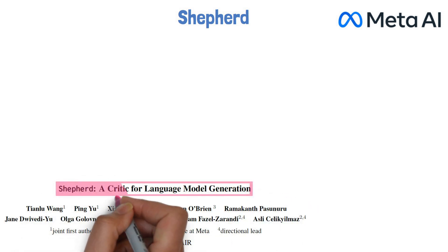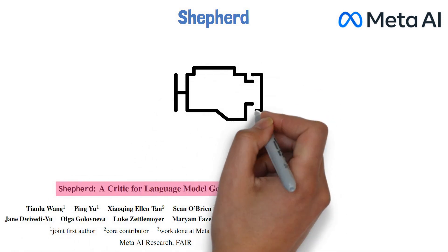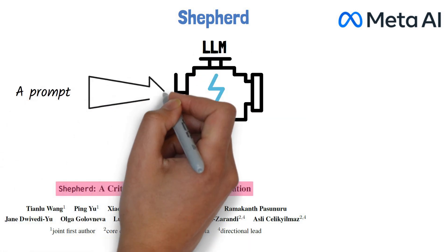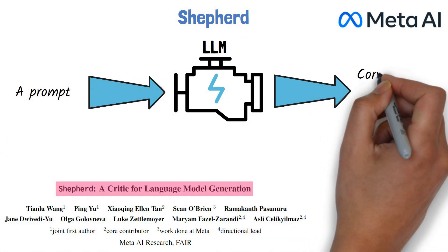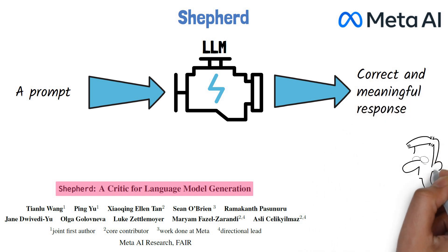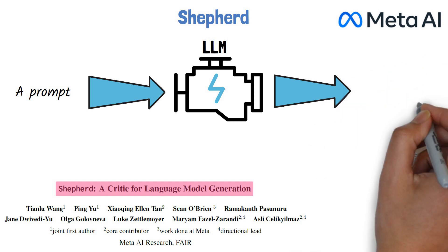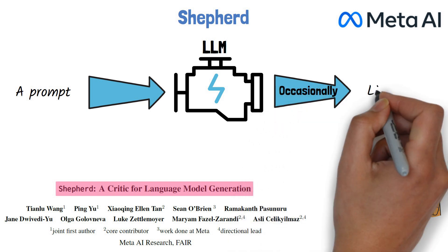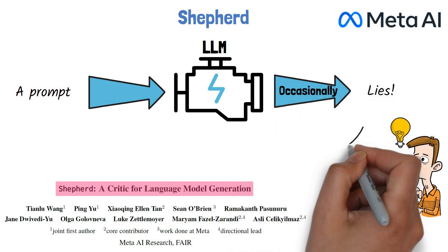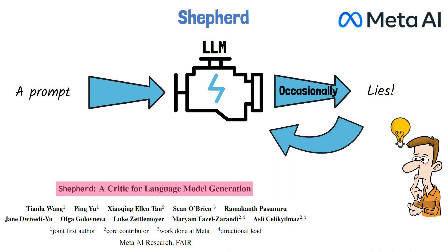Large language models have become increasingly sophisticated and, given a prompt, are able to generate correct, beautiful, and meaningful text. However, a remaining concern is their tendency to occasionally hallucinate and generate unreliable outputs. As a result, there have been efforts to use large language models themselves to refine their own outputs.